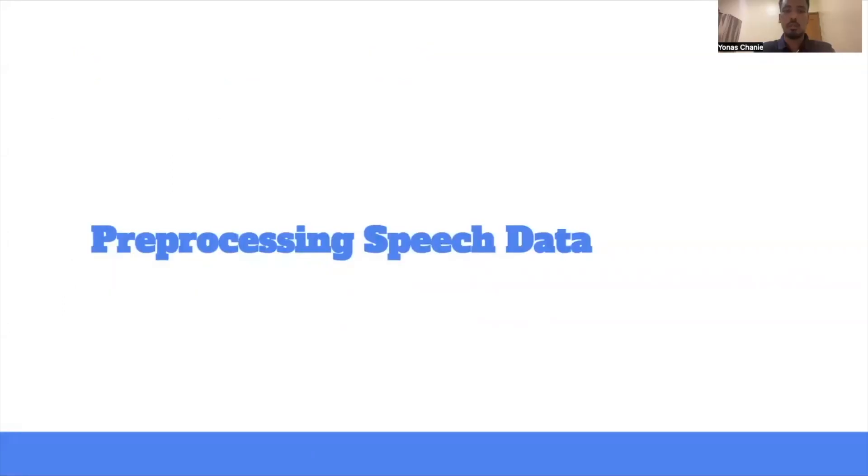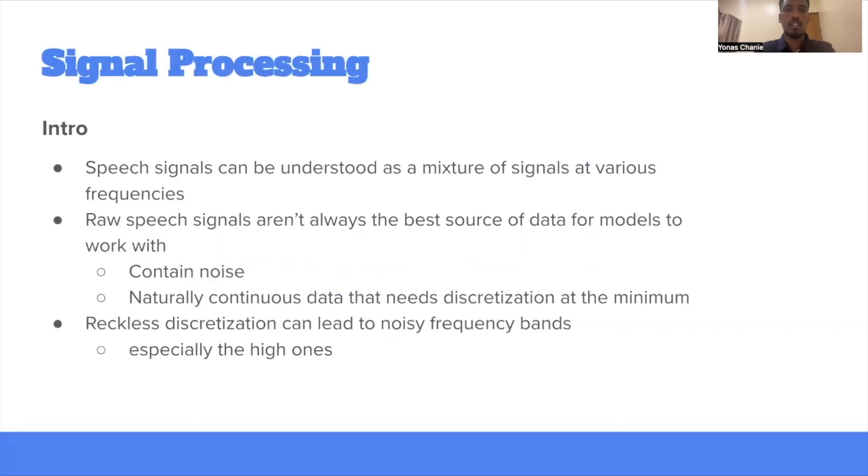Next, we'll talk about how we preprocess speech data. First, let's talk about three main important points before talking about how we can preprocess speech data and why it's necessary to preprocess. The first one is speech signals can be understood as a mixture of signals at various frequencies. That means when someone speaks, the signal over time contains a signal at various frequencies. And the second one is raw speech signal is not always the best source of data for models to work with due to two main reasons, because it contains noise and it's naturally continuous and it needs to be discretized. And the third one is reckless discretization can lead to noisy frequency bands, especially the high ones.